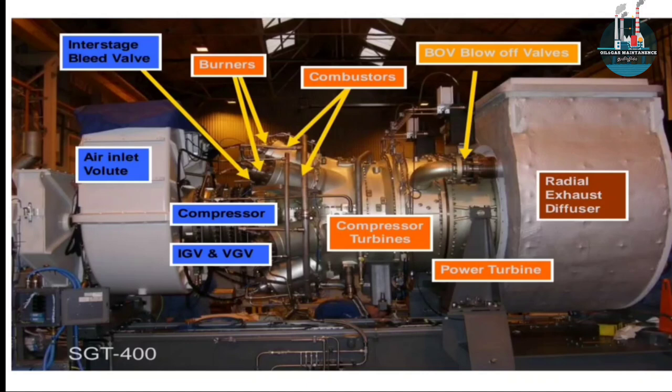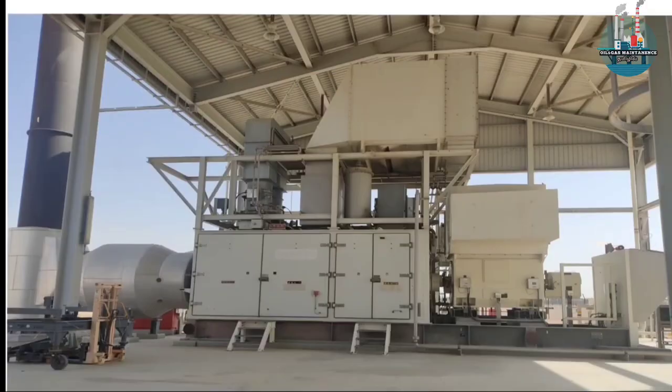We will see the maintenance here. If you have any doubts, comment in the comment section and I will reply. Gas turbines are used in gas plants and power plants. They are rotating equipment, compact in size compared to steam turbines, and are used to produce electricity. Gas turbines are a good choice for combustion engine applications. I will see you in the next video.